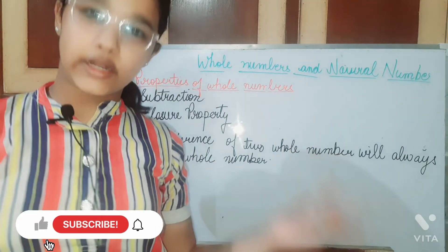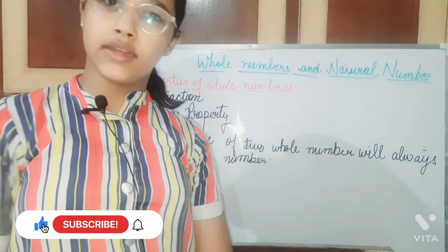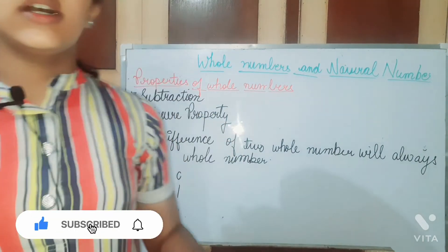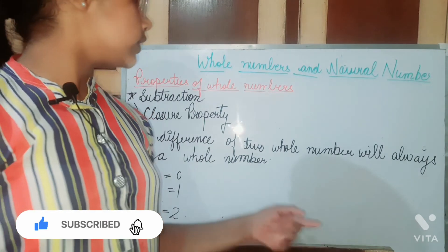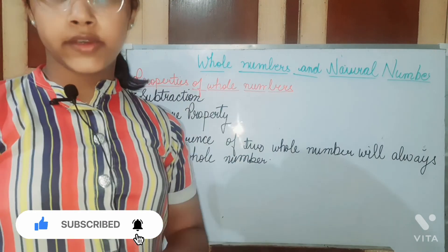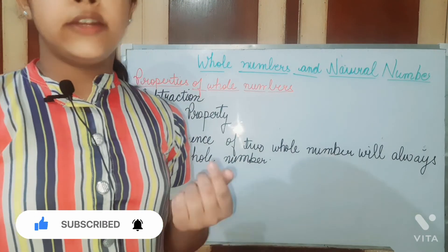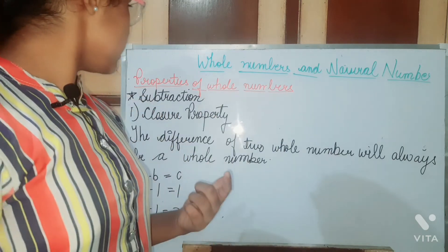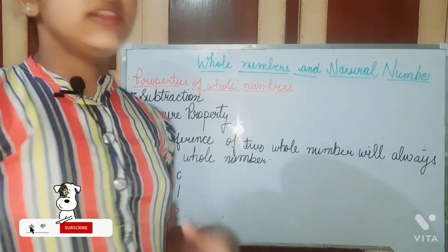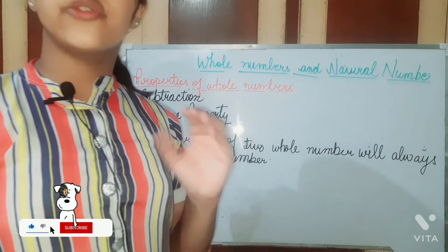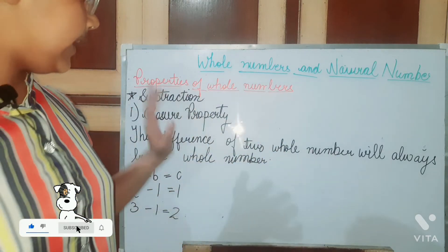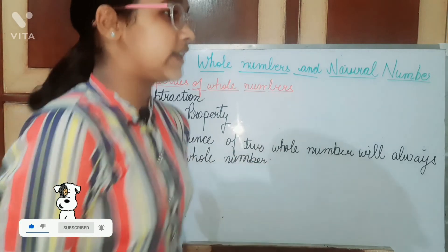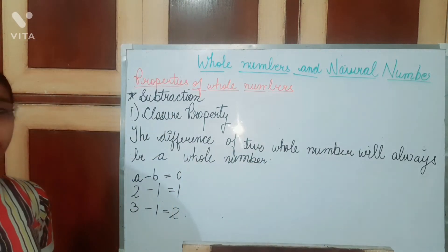Hello friends, welcome back to my channel Learn and Fun with Aastha. In today's video, this is the second part of whole numbers and natural numbers, in which you are going to study the properties of whole numbers. We have completed properties for addition, and now we are starting for subtraction. The first property is closure property.